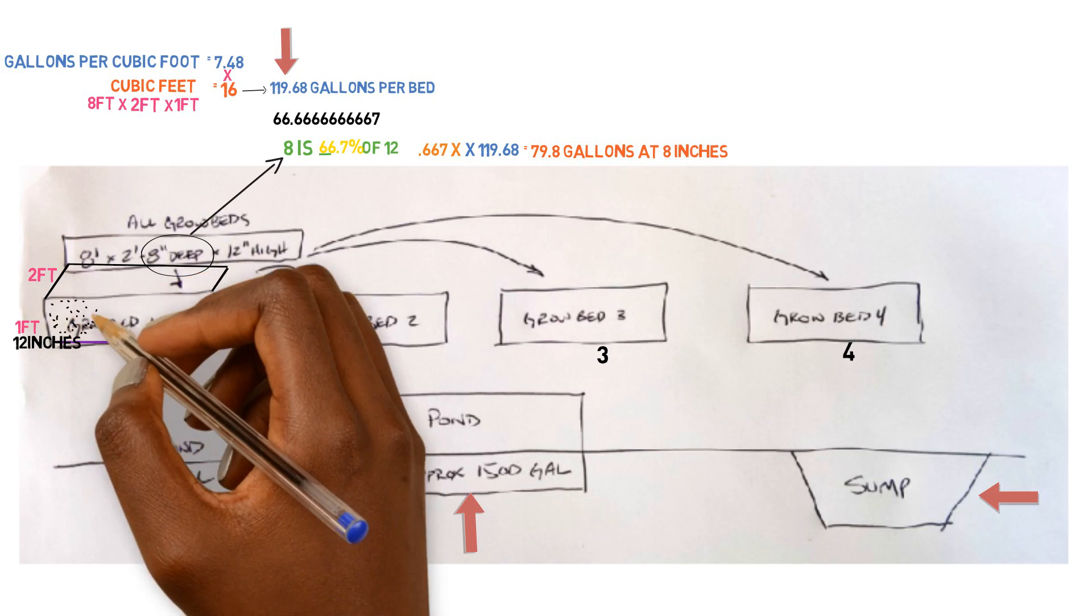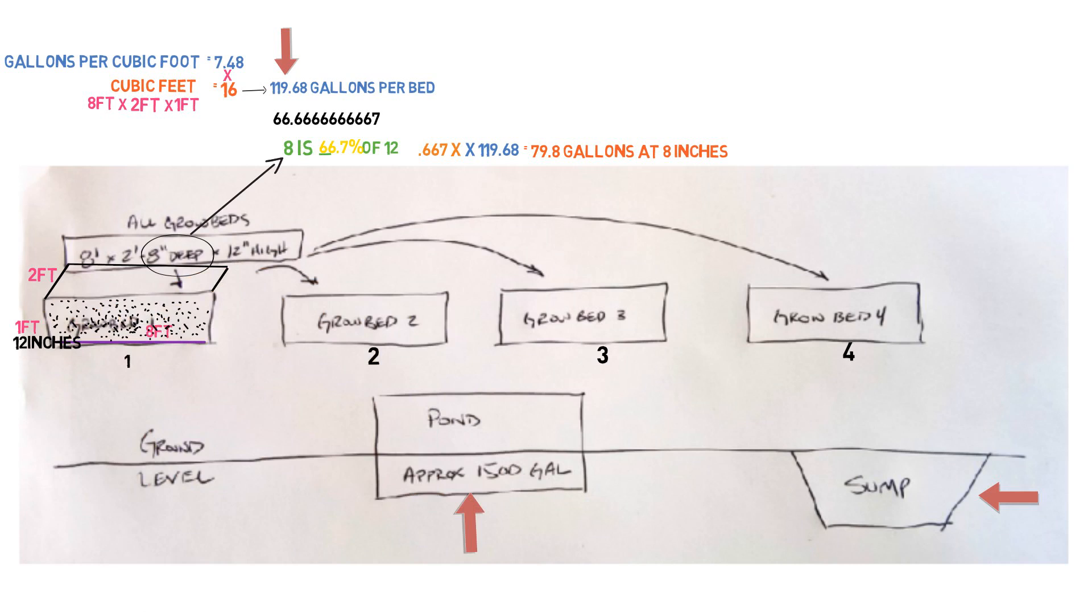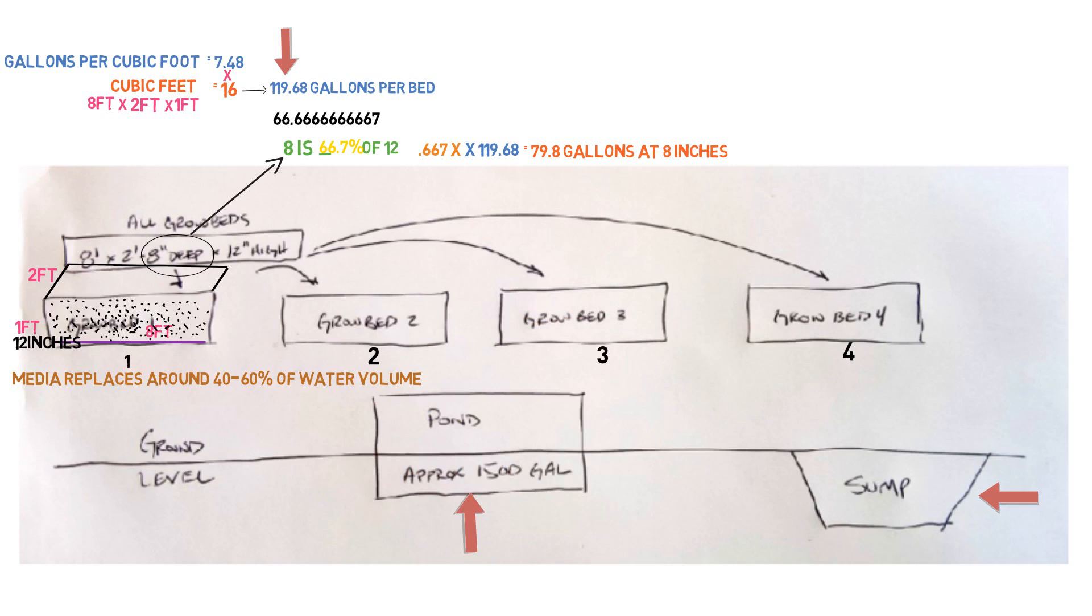Now we're going to be putting media inside of these beds. So what does that mean? That means the media that we put inside the bed is going to be taking up some of this space. So when we put the media in there, it's going to replace some of this water volume. So we have to calculate that as well. So typically if you put like three quarter inch gravel in there, that'll replace somewhere around 40% of the water volume. We'll stick the media in there. 40% of the water is gone.